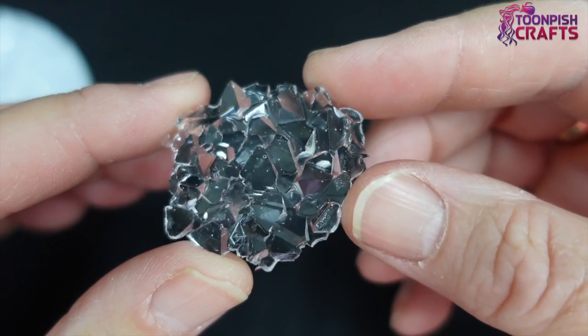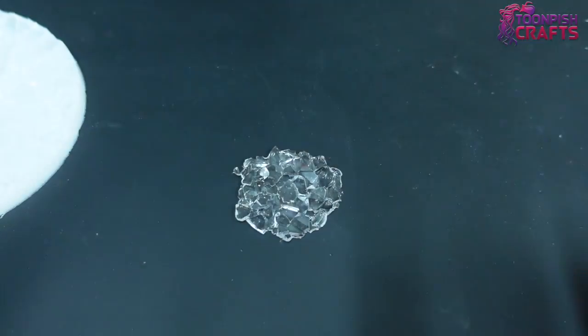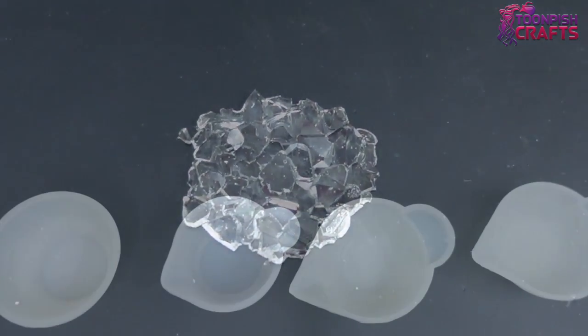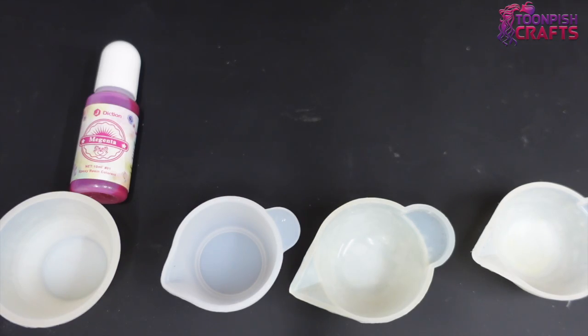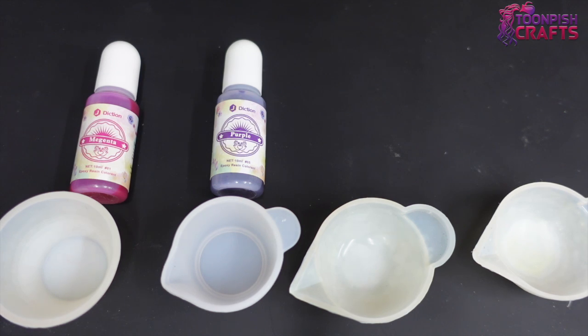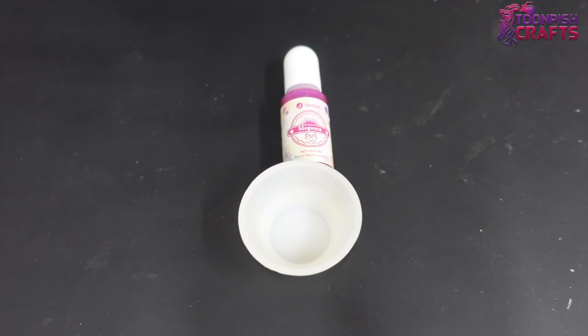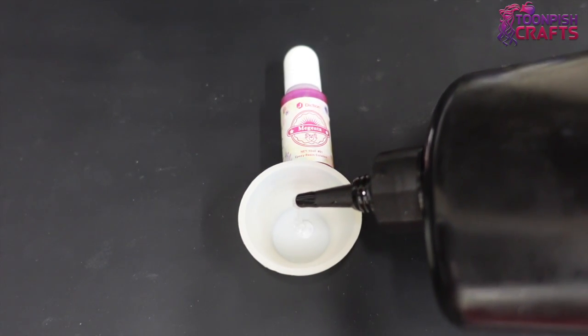So the next test is going to be color. And to make it a little bit more tricky, I'm not going to use Let's Resin color. I'm going to use Jay Diction color and I've got magenta, purple, blue, and white. And the plan is to add a little drop of color into the UV resin, mix it together, and put it into another druzy mold and cure it.